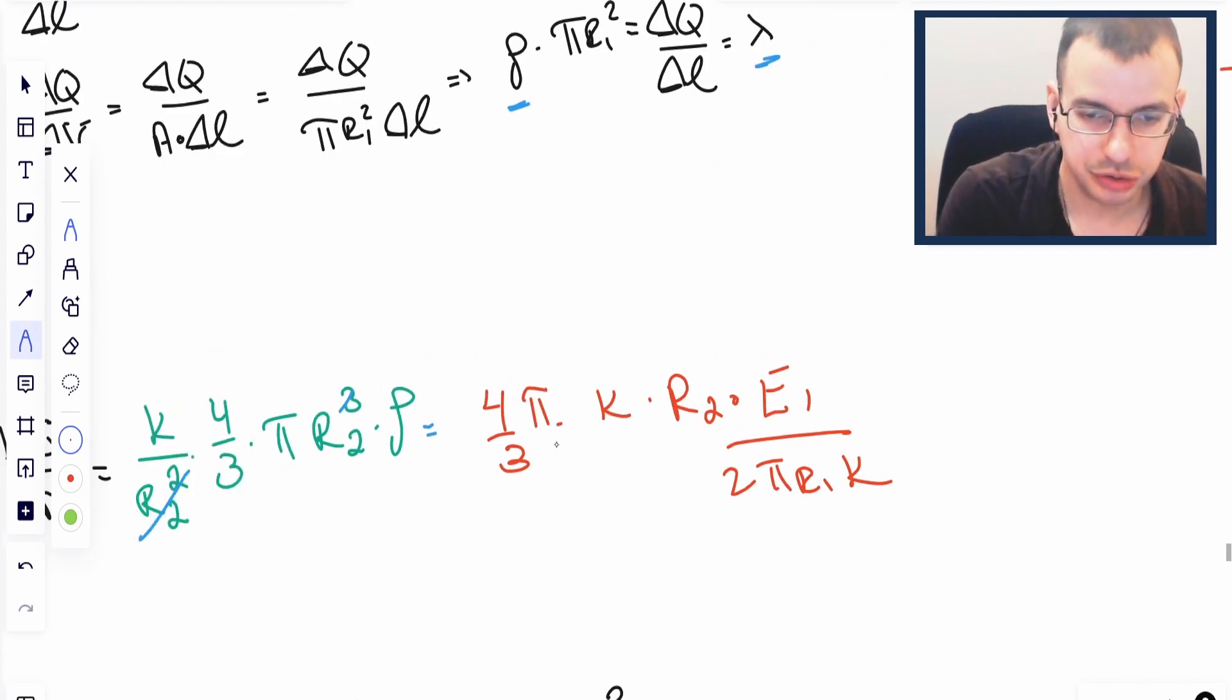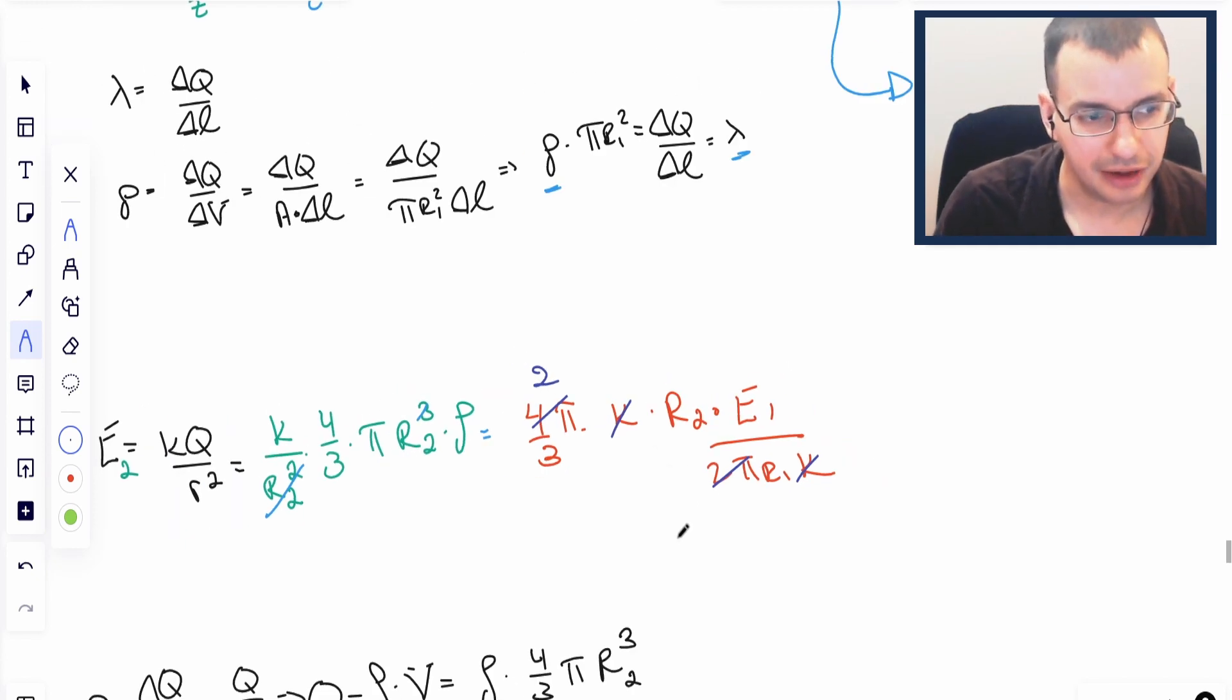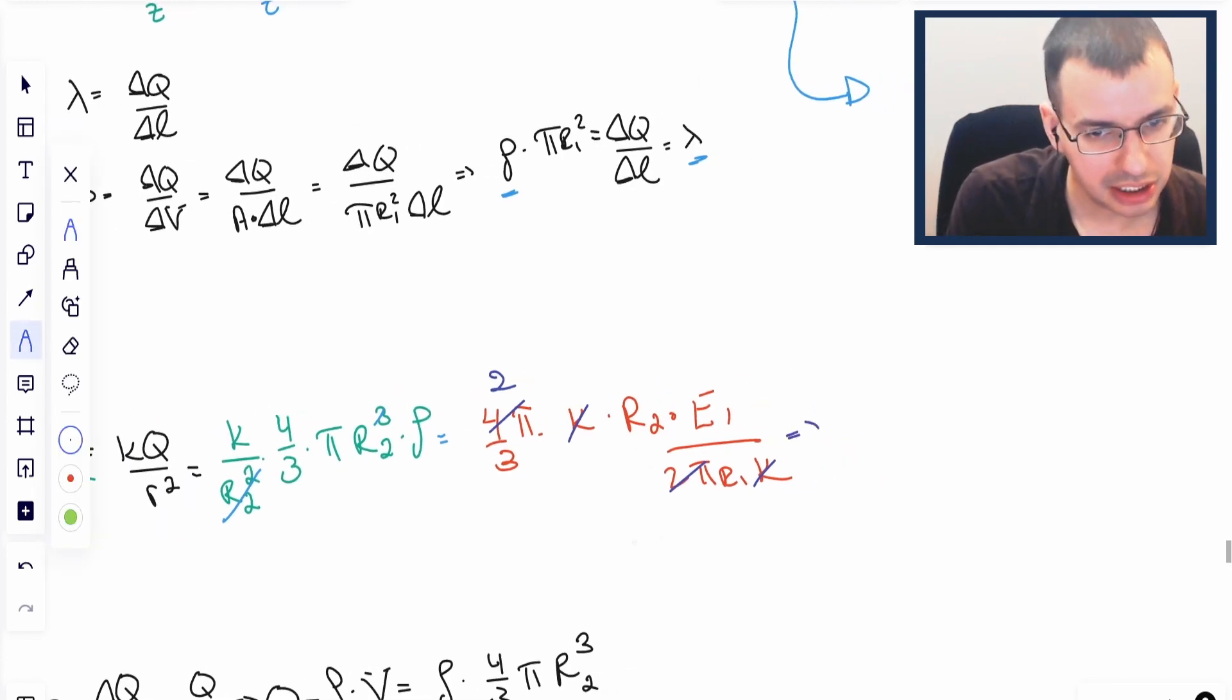Now we're just going to do some canceling. 4 pi over 2 pi becomes 2. K cancels. And we are left with E2 equals 2 thirds R2 over R1 times E1.